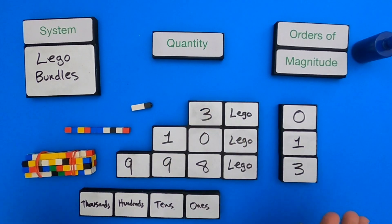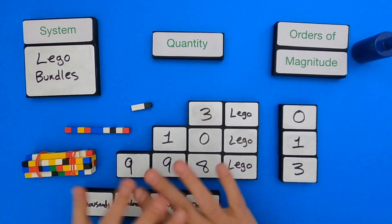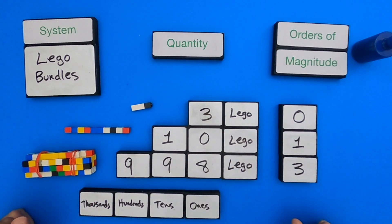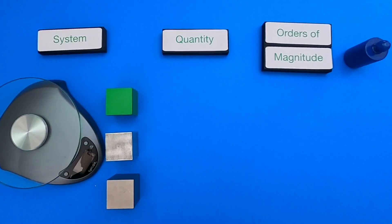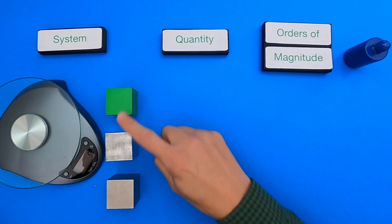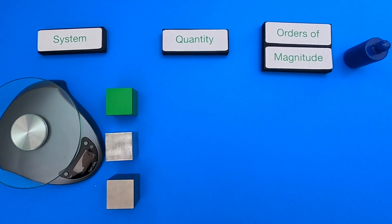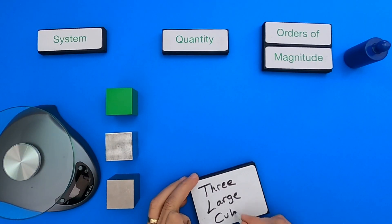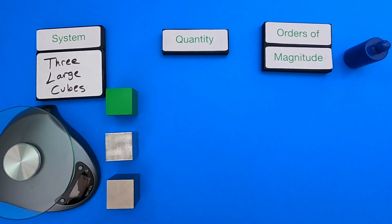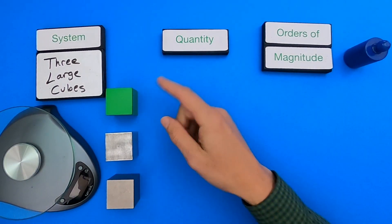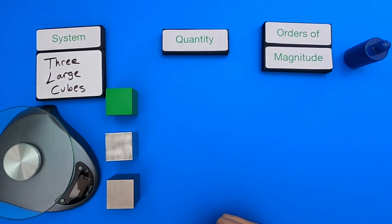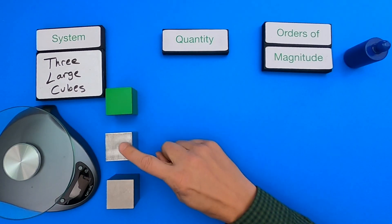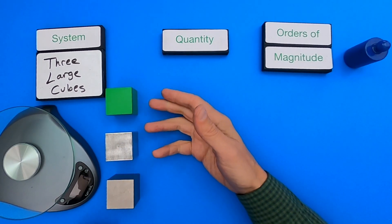Orders of magnitude take a little while to get used to, but once you get it figured out you'll be seeing them everywhere. So I'm going to clear this out and give you another example. For this next example, what I have are these three cubes. The first thing I should do is define the system — these three large cubes.